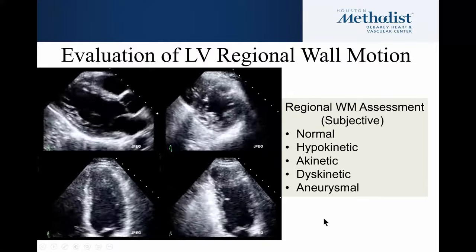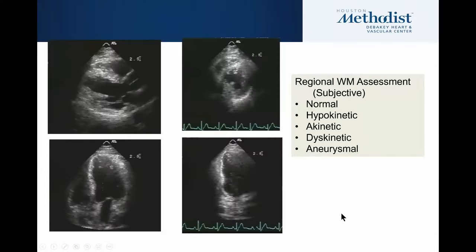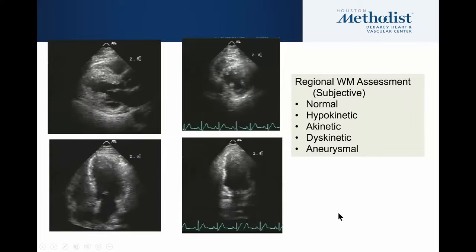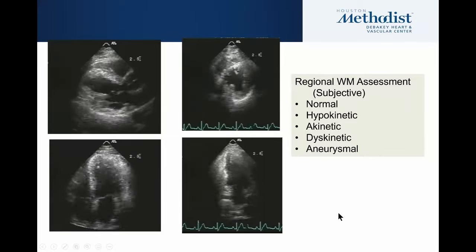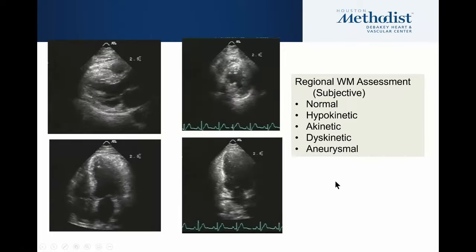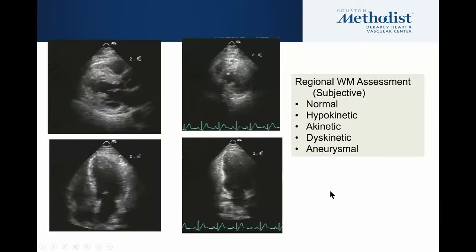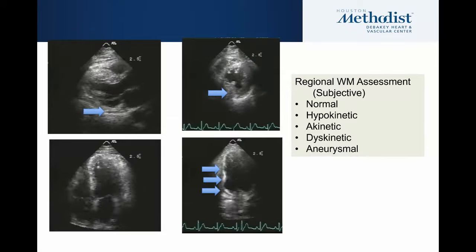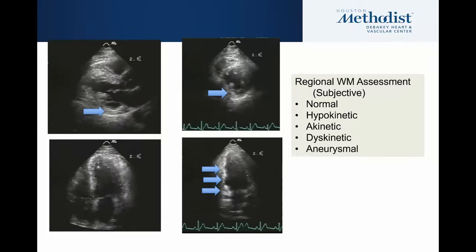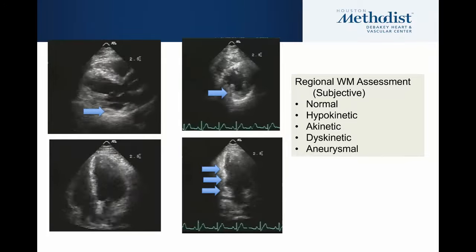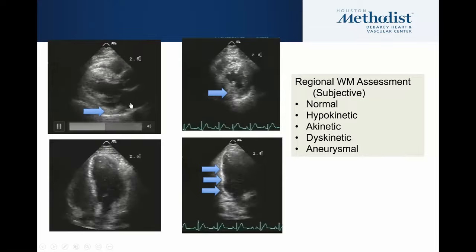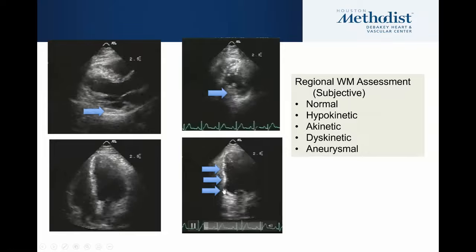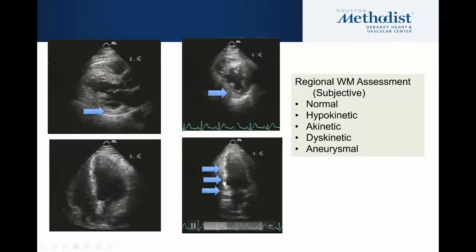This example is a nice normal example. Now here we have a patient that does have some abnormalities. Using the same system, I'm going to help you with the arrows. The areas pointed by the arrow are areas that are either hypokinetic — for example, there's still some thickening here — or akinetic, or maybe even a touch dyskinetic. We could argue about whether this is a little dyskinetic or just akinetic.